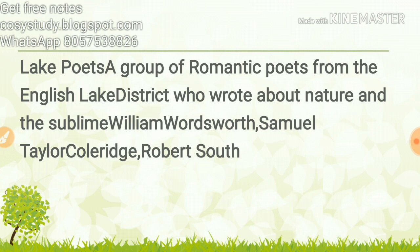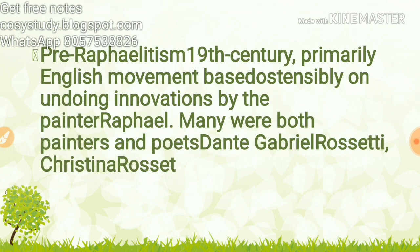Pre-Raphaelitism: a 19th century, primarily English movement based on undoing the innovations by the painter Raphael — that's why it's called Pre-Raphaelitism. Many members were both painters and poets, including Dante Gabriel Rossetti and Christina Rossetti.